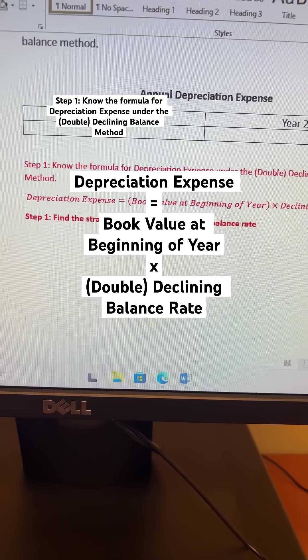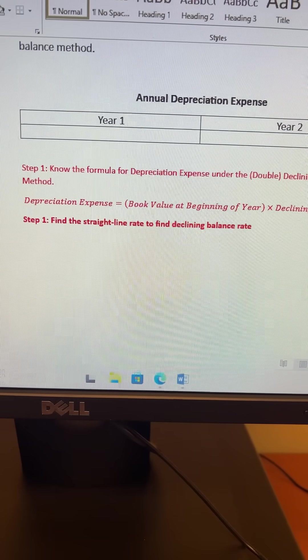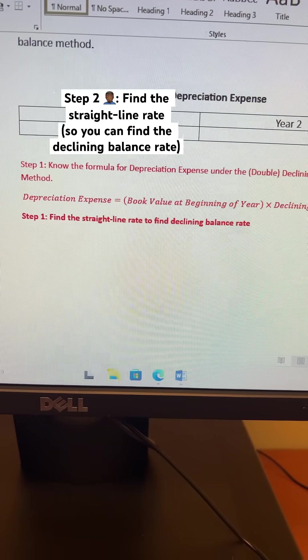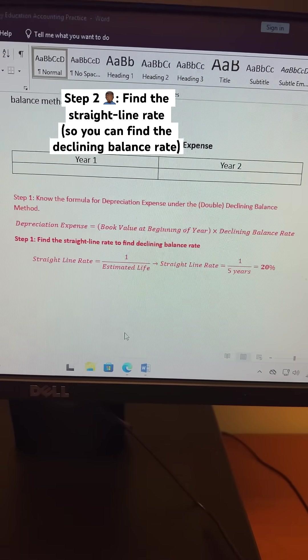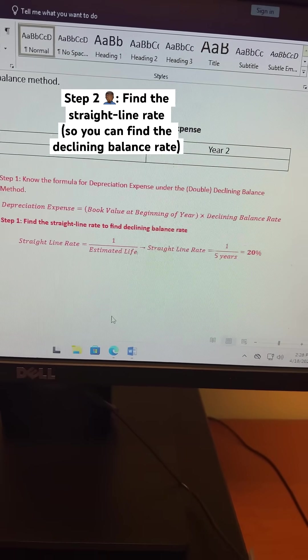I already know what you're asking. Step 2 is to find your straight-line rate because you need that to find your declining-balance rate. Your straight-line rate is equal to 1 divided by your estimated life.